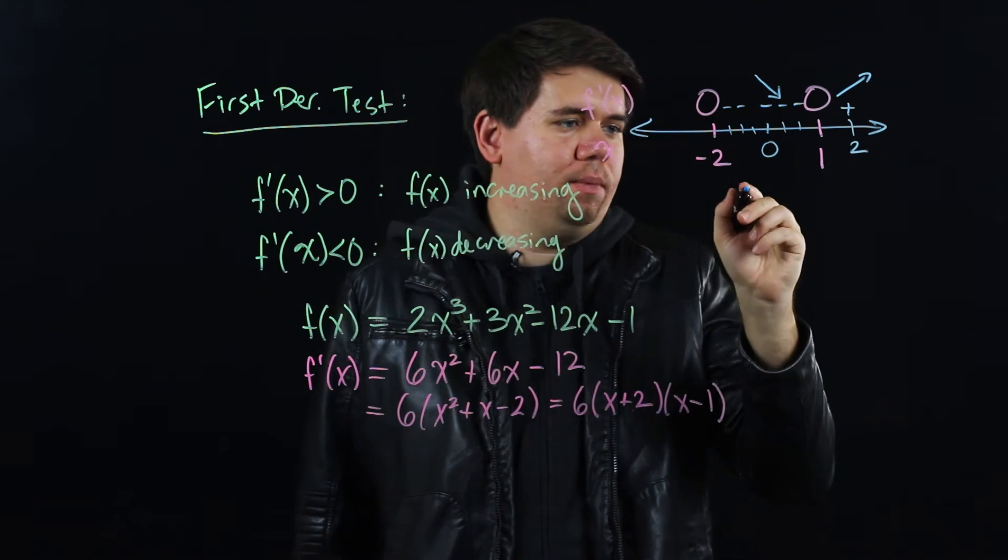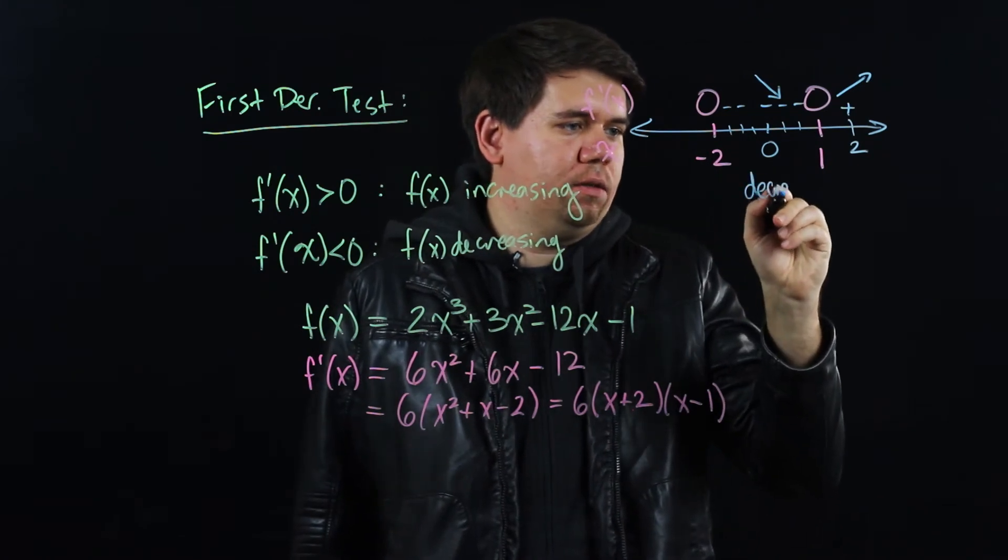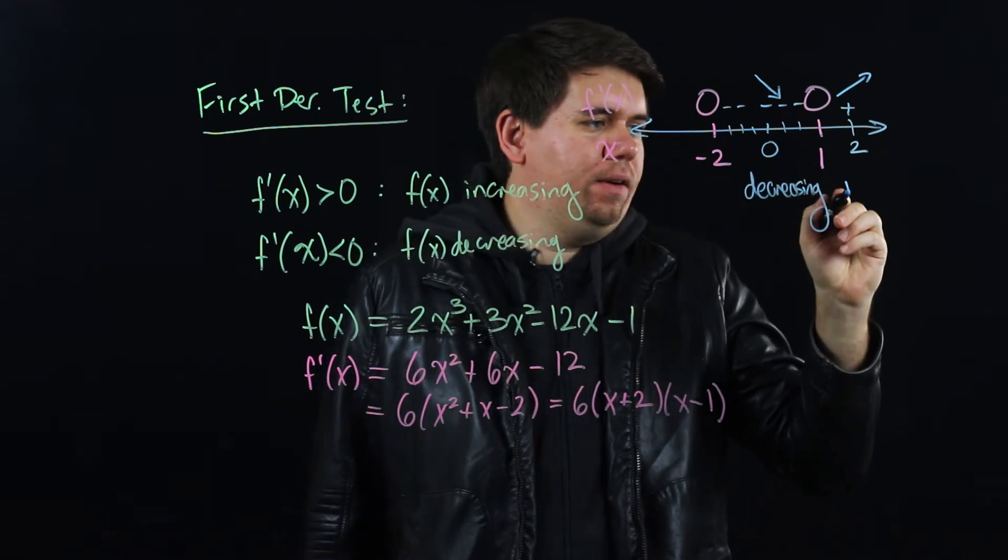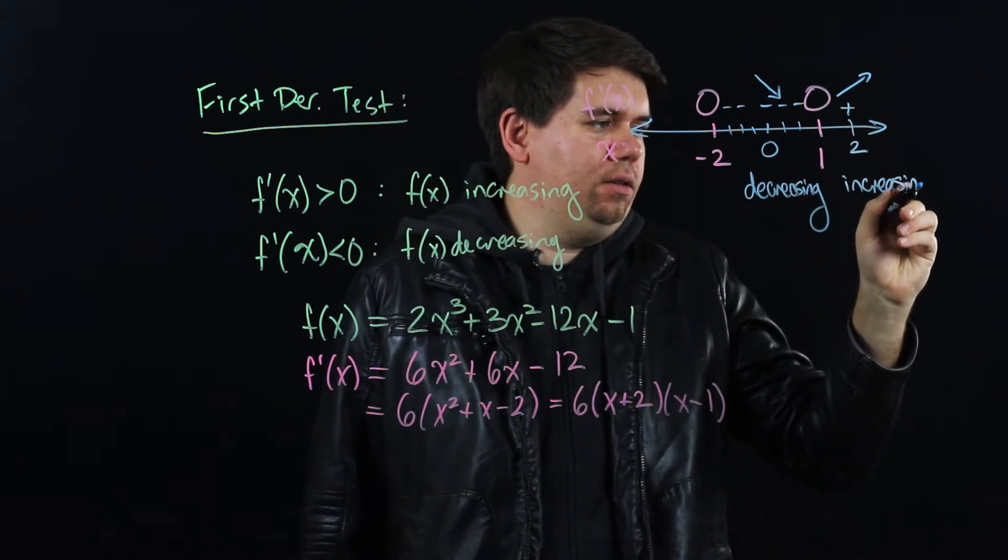So between -2 and 1, my function was decreasing. But then after 1, my function is now increasing.